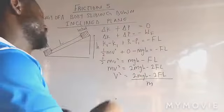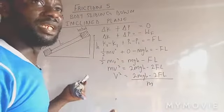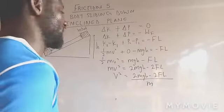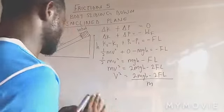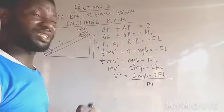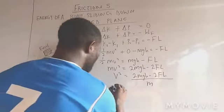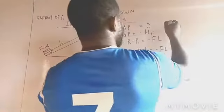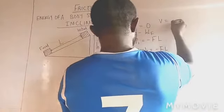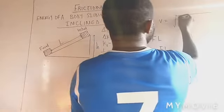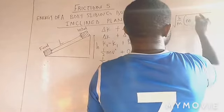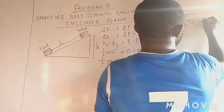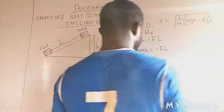So in this regard now, in most cases you are asked to find the final speed or final velocity. In this case let me use final speed to avoid unnecessary confusion. So our V here is now equal to square root of 2 over M, open bracket, MGH minus FL. That is just the square root of that.